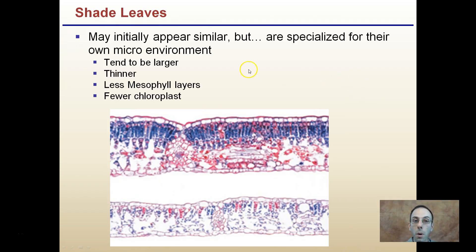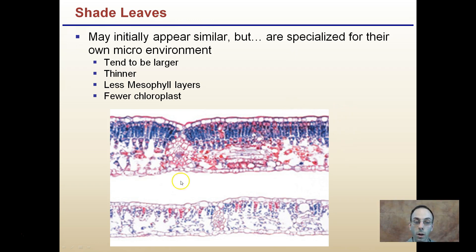Shade leaves may initially appear similar to sun leaves, but are specialized for their own particular microenvironment. Shade leaves tend to be larger in area, thinner, with fewer mesophyll layers and fewer chloroplasts. Leaves in direct sun have a much darker, denser region and can absorb a lot more sun. Sun leaves have a higher photosynthesis rate and better exchange of water, carbon dioxide, and oxygen — that's why they're a little thicker.